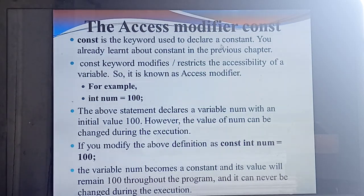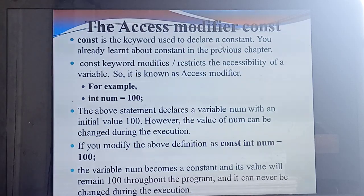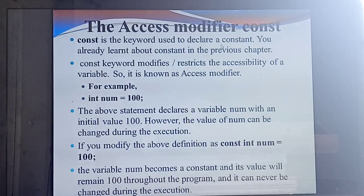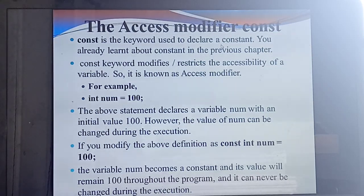Normally, you hear the word constant. What's the constant value for pi? 3.14. What's the meaning of constant? Constant means the value you can't able to change — the value you cannot change as per your wish. That is called constant. Here also, the same meaning for the word const.